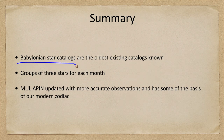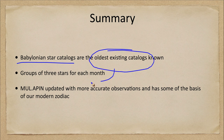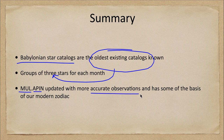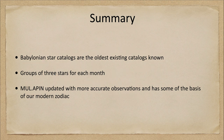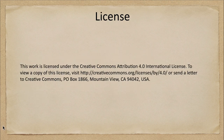To summarize: these Babylonian star catalogs are the oldest existing catalogs known. The earliest one grouped three stars for each month along the celestial equator, and the MUL.APIN updated this with more accurate observations and provides some of the basis for our modern zodiacal constellations. That concludes this lecture — we'll be back next time for another discussion of astronomy of other cultures. Have a great day everyone.